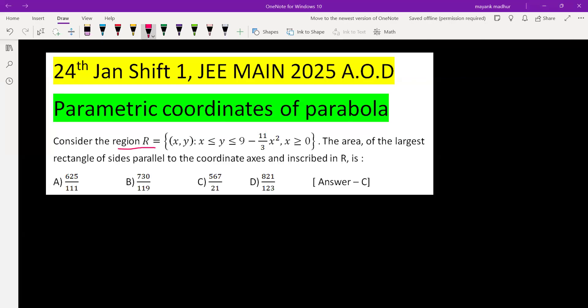Consider the region R which is the collection of all (x, y) such that x is less than or equal to y, and y is less than or equal to 9 minus 11 by 3 x squared, and x is greater than or equal to 0.